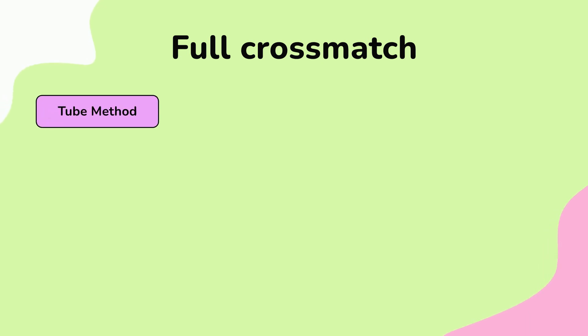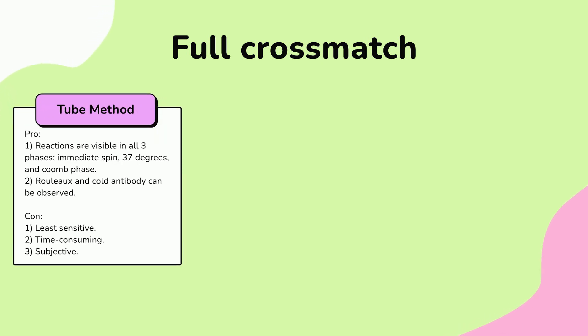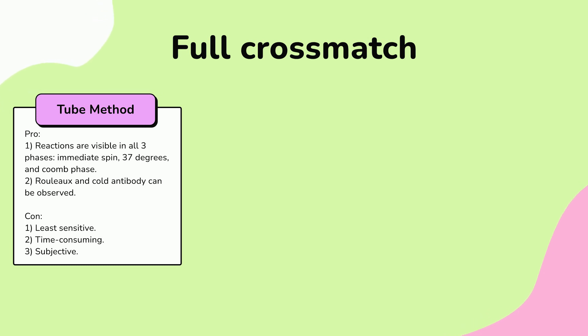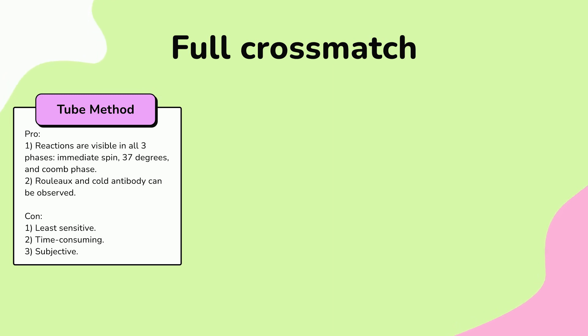Here are some pros and cons for each method of full crossmatch. Tube crossmatch — pros: can see reactions in immediate spin, 37°C, and Coombs phase; you can see rouleaux; helps eliminate cold antibody interference. Cons: least sensitive, time consuming, highly reliant on technician skills, and the reading can be subjective.